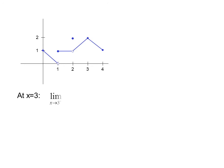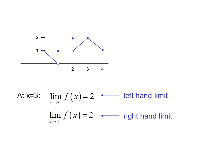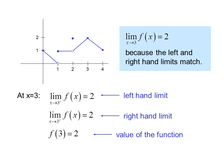At x equals 3, the limit as x approaches 3 from the left-hand side of f of x equals 2, because the y value is approaching 2. We're approaching 2 from the left and from the right. In this case, the value of the function f of 3 is also 2 — that's nice but irrelevant because we're just looking for the limit. The limit as x approaches 3 of f of x equals 2, because the left and right-hand limits match.